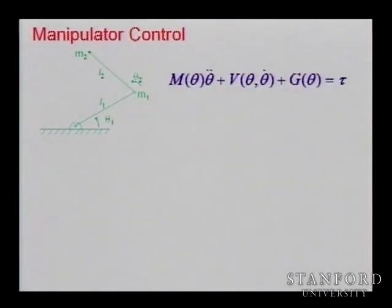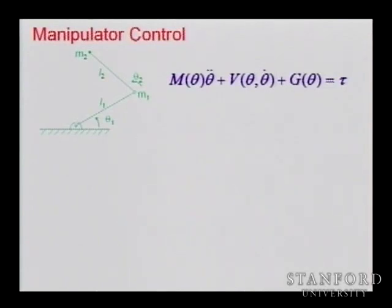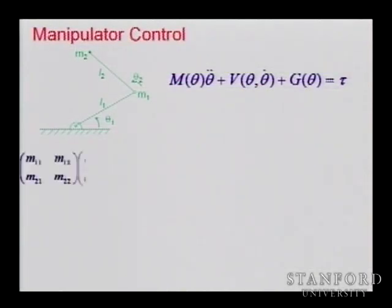Let's go back to control. The figure on the left is a two-degree-of-freedom manipulator, revolute-revolute. Last time we saw how we can develop a PID controller for one degree of freedom and deal with the control of that robot. Now we will develop the equations of motion and rewrite them in two equations.